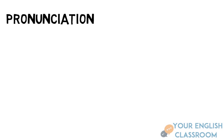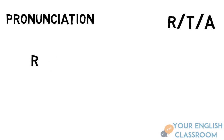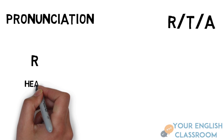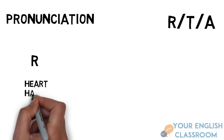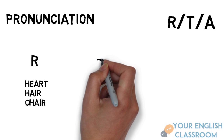It's an interesting one — pronunciation. Let's look at just three letters: R, T, and A. Keep in mind I'm not an American, but I'll give it a try. The sound of R is stronger in American English, for example: 'heart', 'hair', 'chair'. British people say 'heart', 'hair', and 'chair' — notice the R is not as strong.